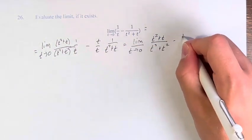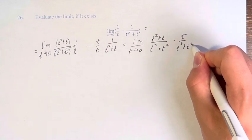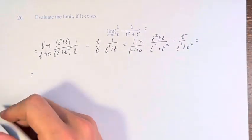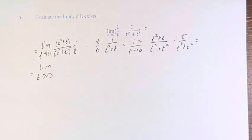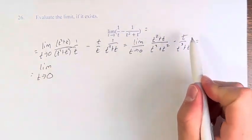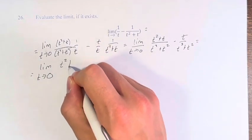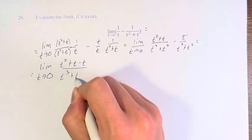Minus t times 1, which is just t, over the same denominator. So we have the limit as t approaches 0 of—since these have the same denominator now, we can subtract the numerators—t squared plus t minus t over t cubed plus t squared.